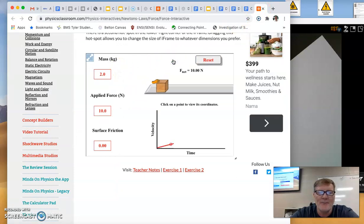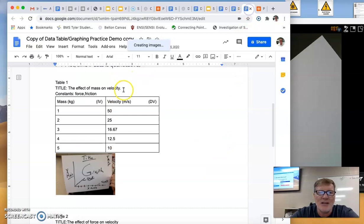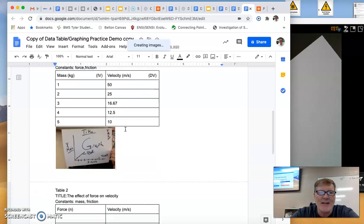Go back to the simulator. I change my mass to 2. I run it. Again, keeping these two constant. My new velocity is 25 meters per second. So I plug that in, 25 meters per second. Once I have this data set, the assignment is to graph that data.